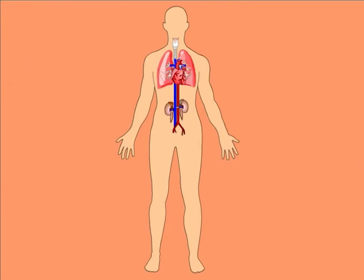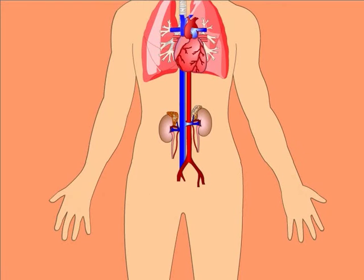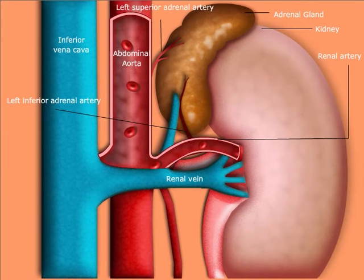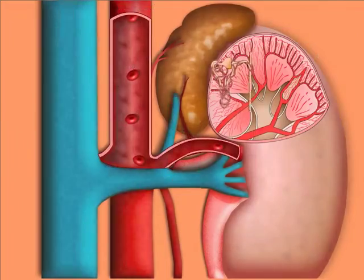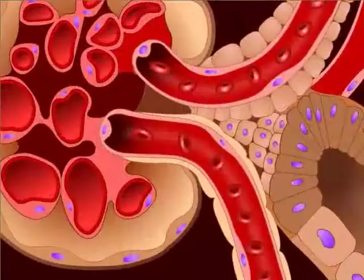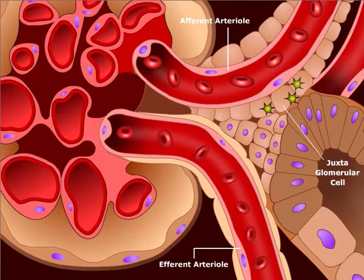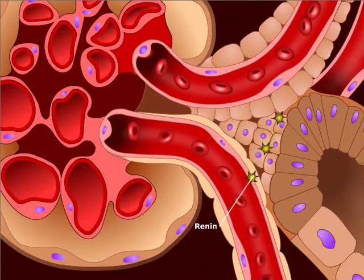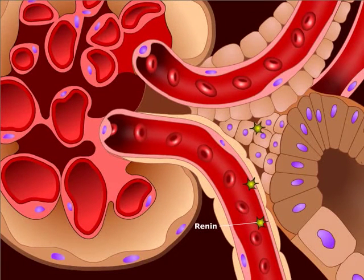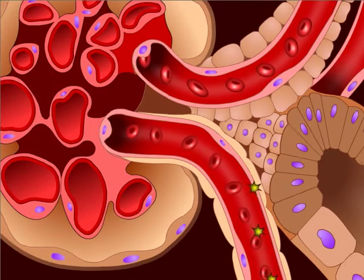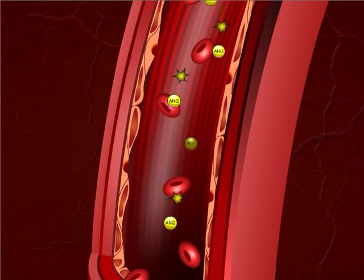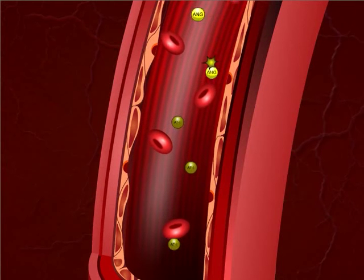We will now review the activation of the renin-angiotensin-aldosterone system in response to reduced blood pressure. Let's take a closer look at the kidney. A decrease in blood pressure results in reduced perfusion to the kidneys. This reduces the tension within the wall of afferent arterioles, which stimulates renin release from juxtaglomerular cells. Renin release is also stimulated by increased sympathetic activity. After its release, renin circulates through the bloodstream where it converts angiotensinogen, synthesized by the liver, to generate angiotensin-1.